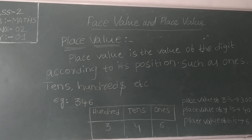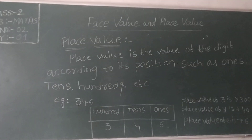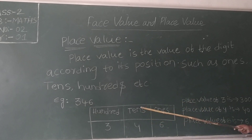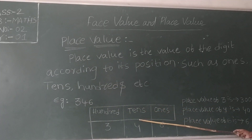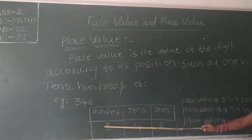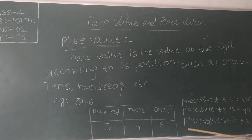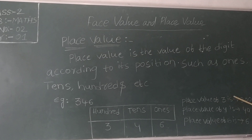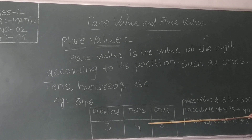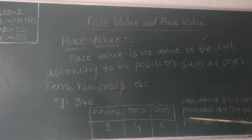Here, see the example: I am taking 346. First we look at the place value chart with 1s, 10s, and 100s, because this is a 3-digit number. In the 1s place: digit 6. In the 10s place: digit 4. In the 100s place: digit 3. What is the place value of 3? It is in the 100s place, so 3 × 100 = 300. The place value of 4 is in the 10s place, so 4 × 10 = 40. The place value of 6 is in the 1s place, so 6 × 1 = 6.